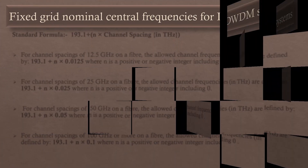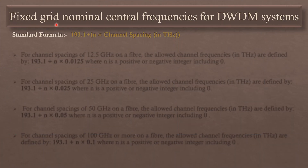Fixed grid nominal central frequencies for DWDM systems. The standard formula is: 193.1 plus N times channel spacing in Terahertz. Here 193.1 is the ITU-T defined central frequency in Terahertz. We put the channel spacing in Terahertz, and N is an integer value that varies from 0 towards positive integers and towards negative integers — 0, 1, 2, 3, or minus 1, minus 2, minus 3 — giving us different frequency values.